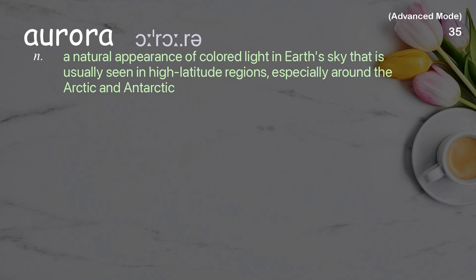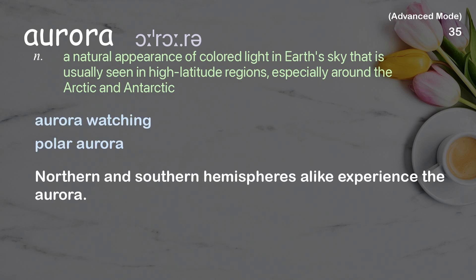Aurora: a natural appearance of colored light in Earth's sky, usually seen in high-latitude regions, especially around the Arctic and Antarctic. Examples: aurora watching, polar aurora. Northern and southern hemispheres alike experience the aurora.